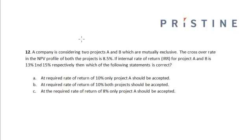A company is considering two projects A and B which are mutually exclusive. The crossover rate in the NPV profile for both the projects is 8.5%. If the internal rate of return for project A and B is 13% and 15% respectively, then which of the following statements is true? So let us first try to draw the NPV profile of both the projects.